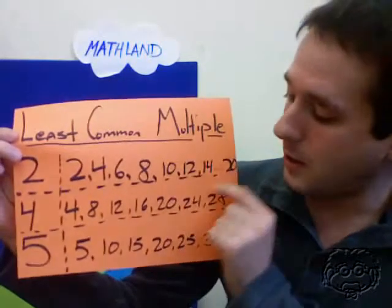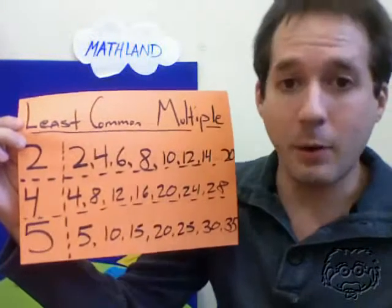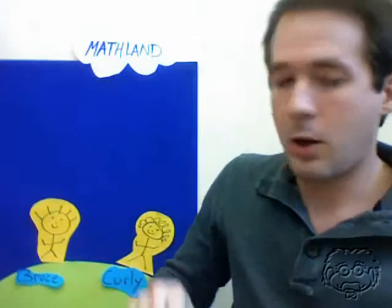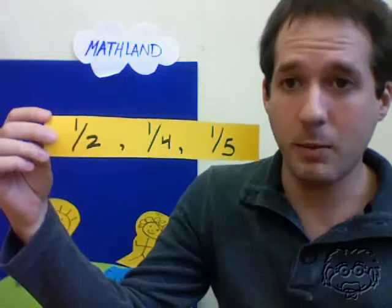20 is here, here, and here. And there's no smaller number that 2, 4, and 5 all divide evenly into. That means for 1 half, 1 fourth, and 1 fifth, our lowest common denominator is going to be 20.